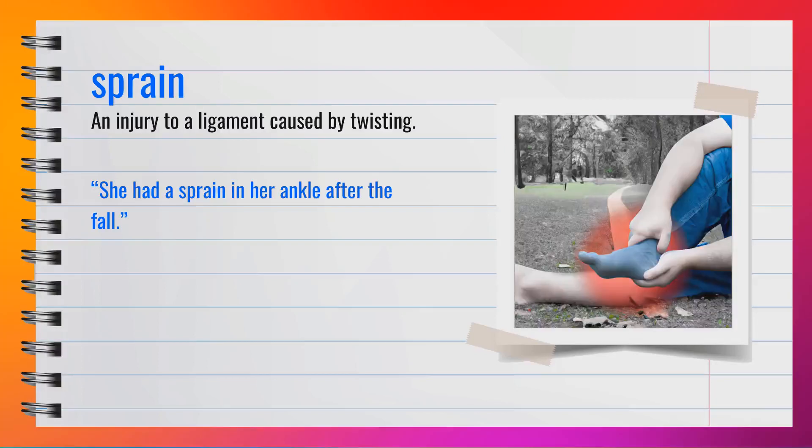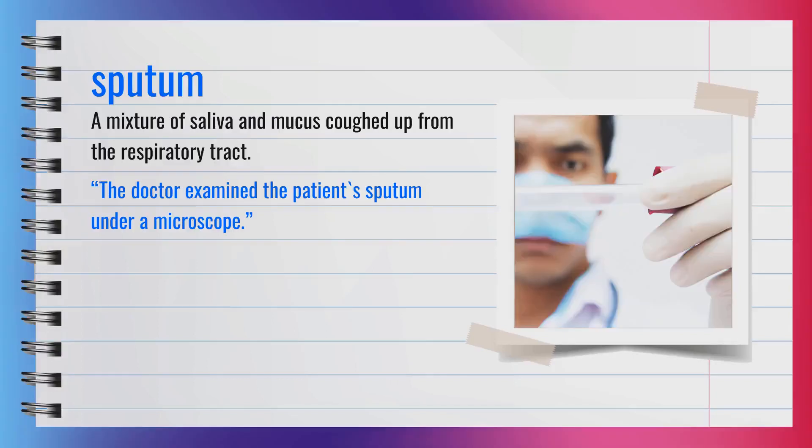The word sprain is a noun, spelled S-P-R-A-I-N. It refers to an injury to a ligament caused by twisting. Pronounced 'sprain.' Another word for sprain could be twist. For example, she had a sprain in her ankle after the fall. A sprain is a ligament injury from twisting or pulling.